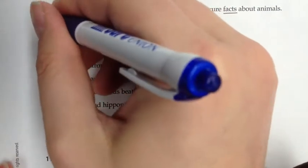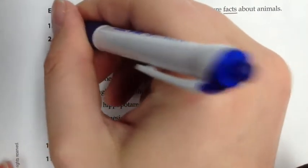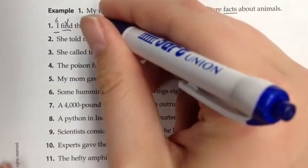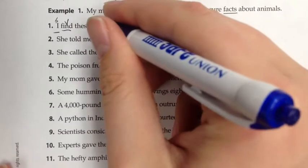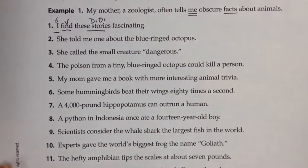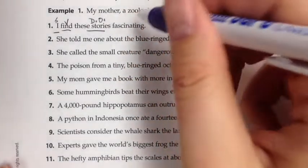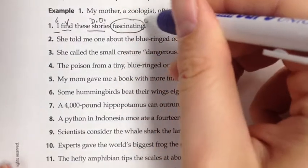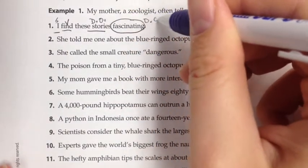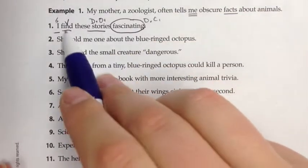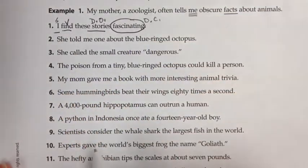Number one: 'I' is the subject. 'Find' is the verb. 'These stories' is our direct object — it's the thing that I'm finding. And how do I find these stories? I find them fascinating. So we'll circle 'fascinating' because it is our objective complement. It explains how the verb 'finding' was done to the stories. How do I find the stories? Fascinating.